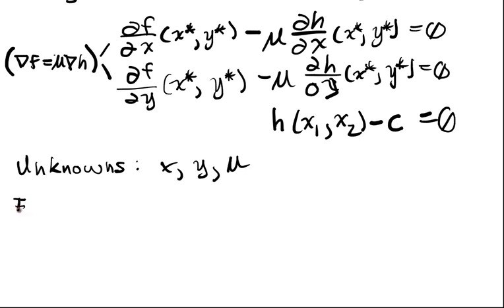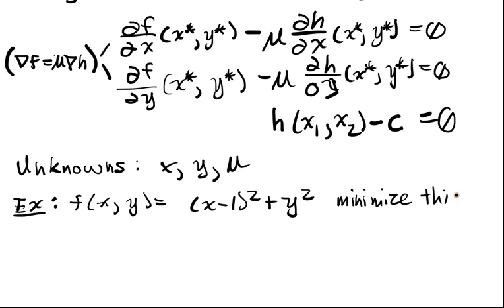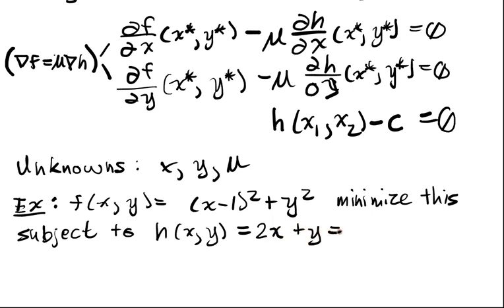Example. So how does this work in practice? Well, let's suppose that f(x, y) is equal to (x - 1)² + y². And we want to minimize this subject to the constraint h(x, y) equals 2x + y equals 1. So that's our constraint. Well, let's plug it into these equations.